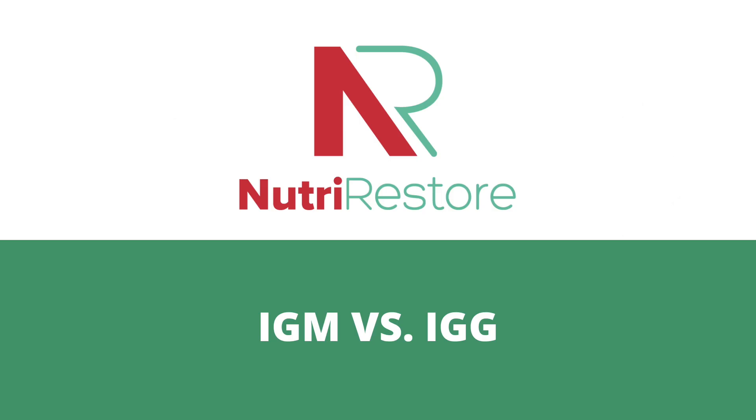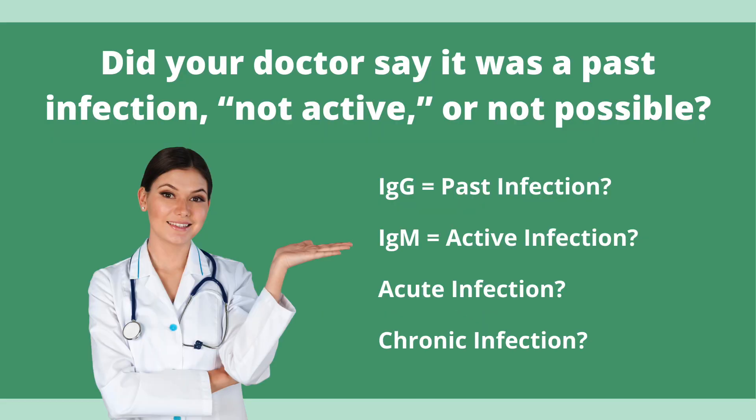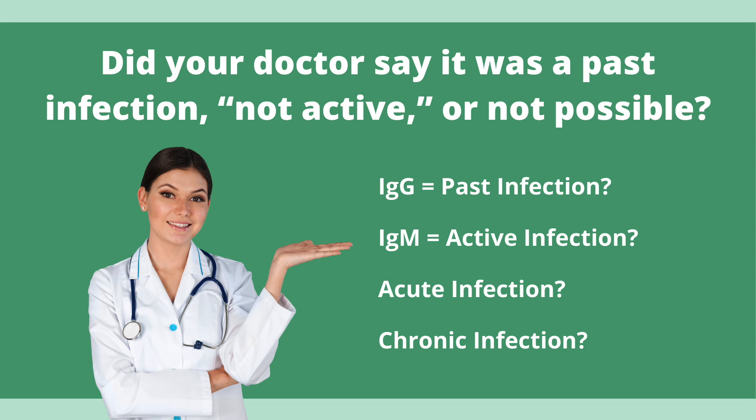So first off, I get comments from other doctors that this means a past infection or it's not active or it's even not possible. I want to kind of parse some of these out. So if you have an IgG positive, people say it's a past infection. You have an IgM, people say it's active and people will use acute or chronic.